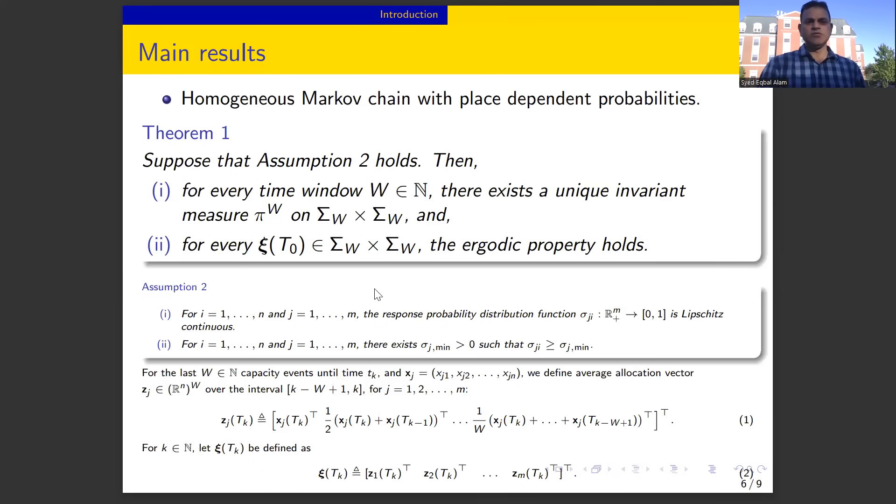We model the system as a homogeneous Markov chain with place-dependent probability. We show that for a finite time window, the average allocations converge to unique invariant measure. And we also show that the ergodic property holds. This signifies that the convergence is independent of initial conditions.